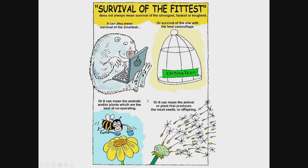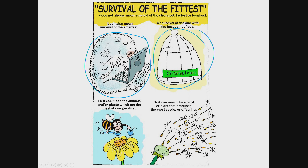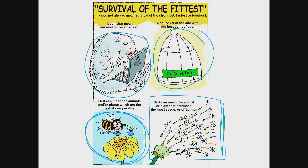Survival of the fittest does not always mean survival of the strongest, fastest, or toughest. It can mean survival of the smartest, or the best at camouflage — notice how that chameleon is so good at camouflaging you can't even see it. It could mean the animals or plants which are best at cooperating, like a bee and a flower in a symbiotic relationship: bees benefit by getting nectar, and the flower benefits because bees spread pollen to other flowers. Or it can mean the organism that produces the most seeds or offspring — successful just because of sheer numbers.